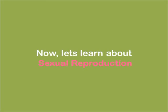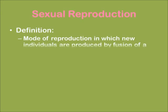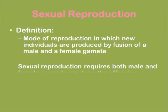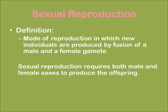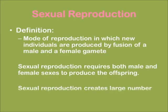Now let's learn about sexual reproduction. Sexual reproduction is a mode of reproduction in which new individuals are produced by fusion of a male and a female gamete. It requires both male and female sexes to produce offspring and creates a large number of variations.